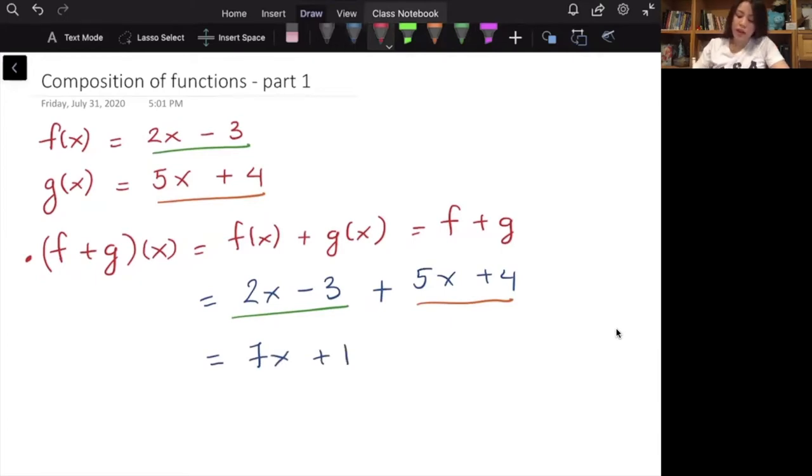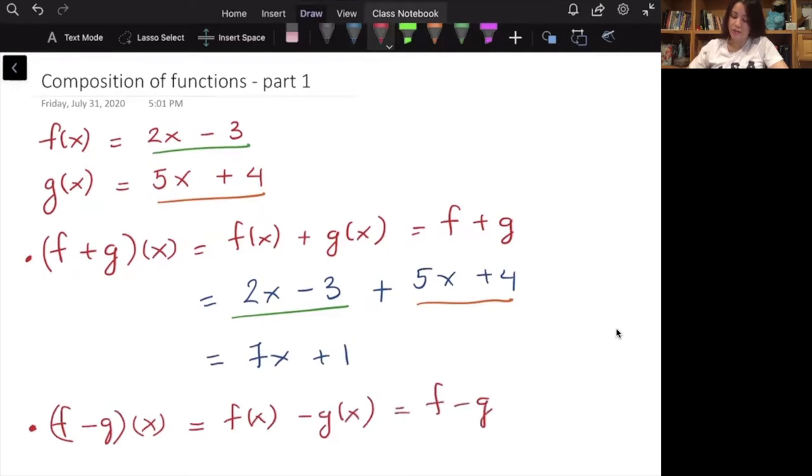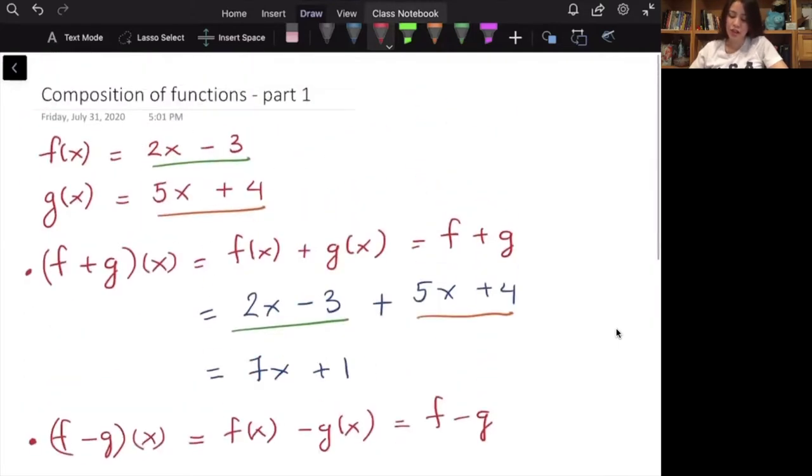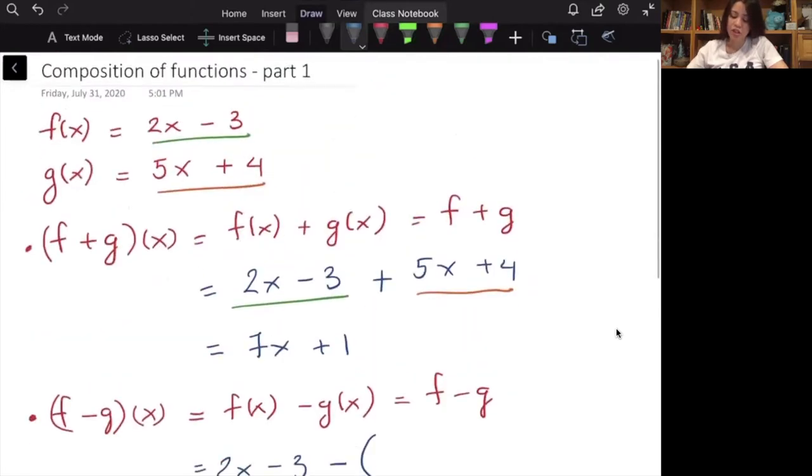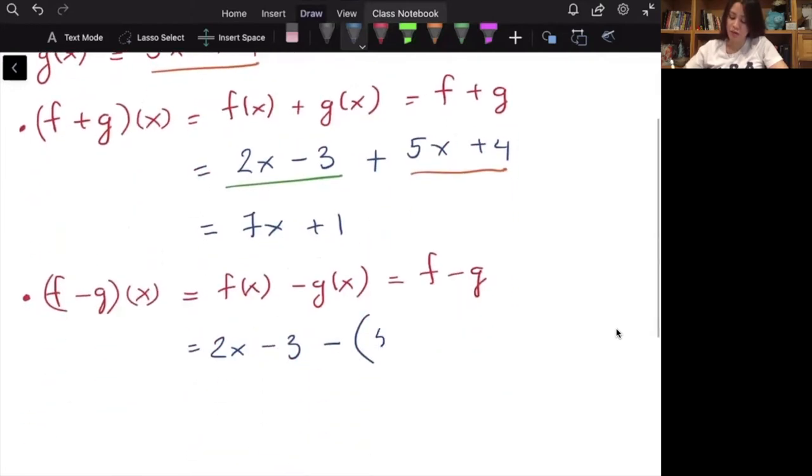Or we can subtract them. We can take (f-g)(x). Or you can write it the other way, f(x) minus g(x), or f minus g. So I'm going to take function f, which is 2x minus 3, minus the function g, which is 5x plus 4. Be careful when you subtract a function, you need to put a parenthesis in front of it, because we have a negative in front of the function here.